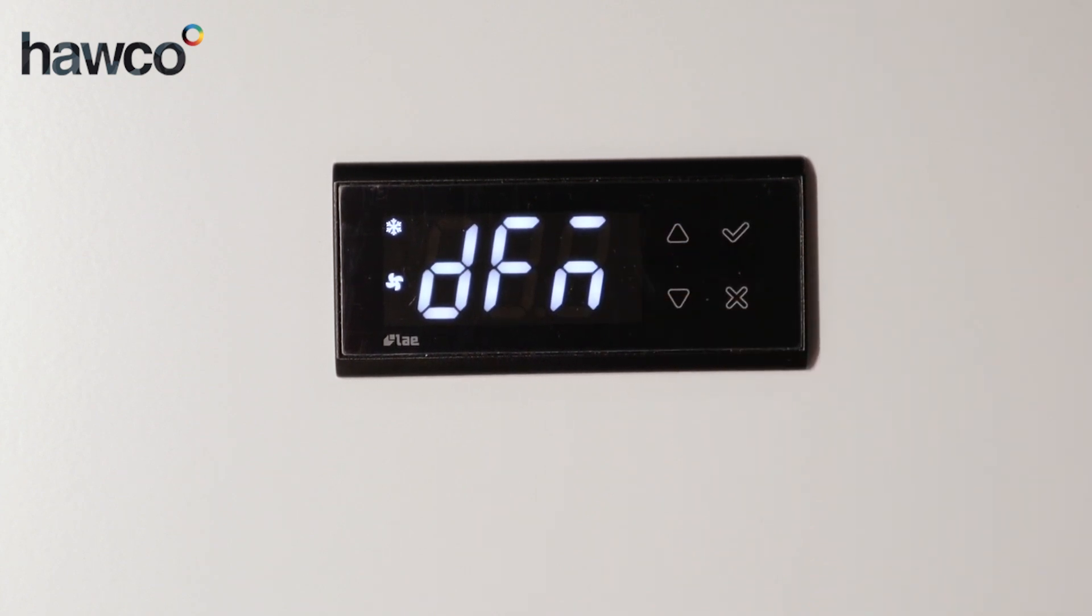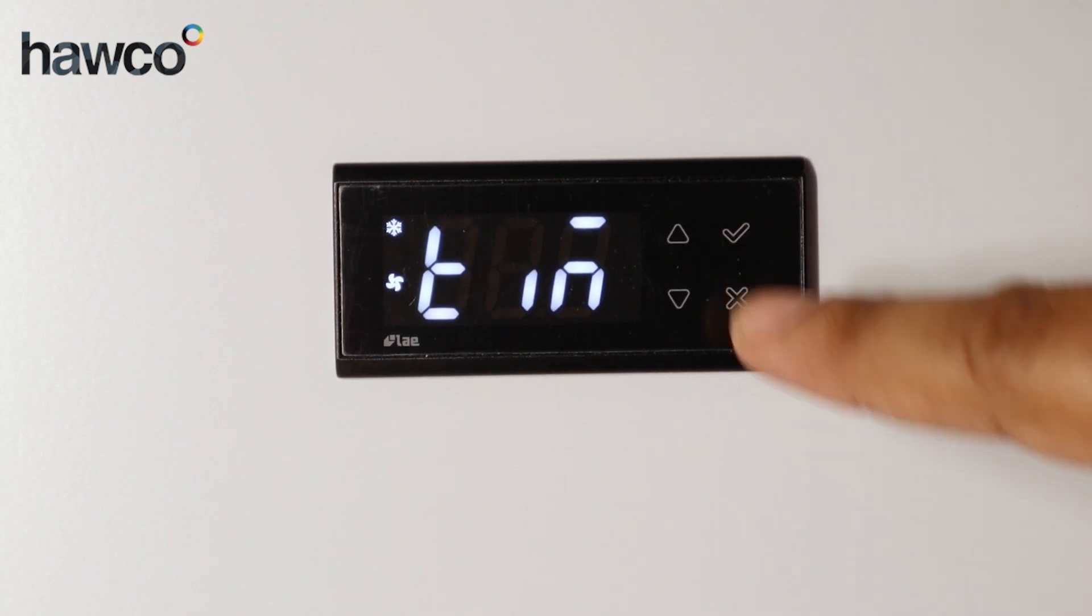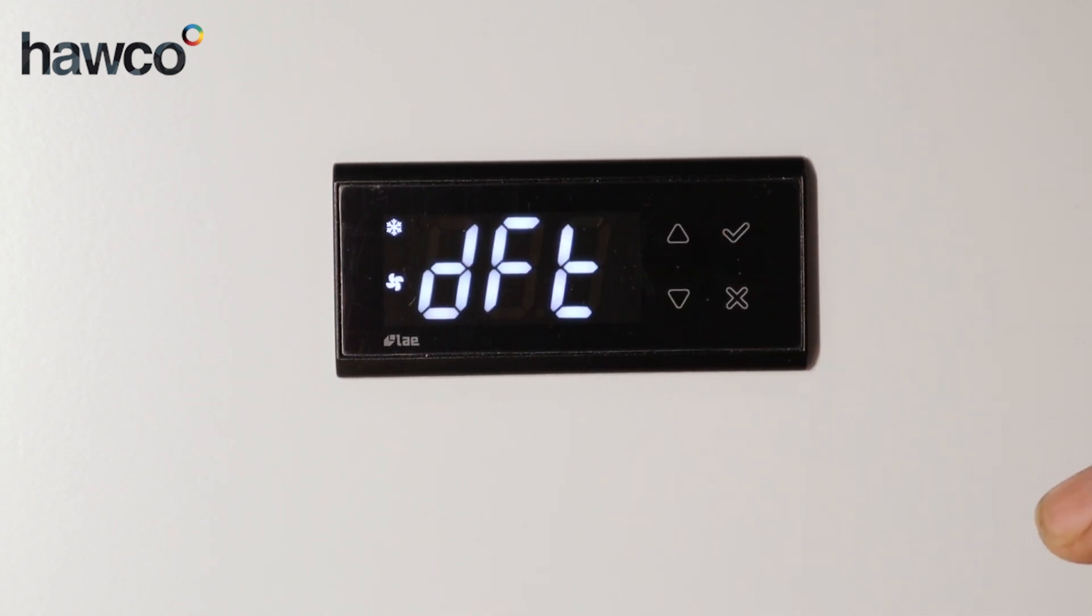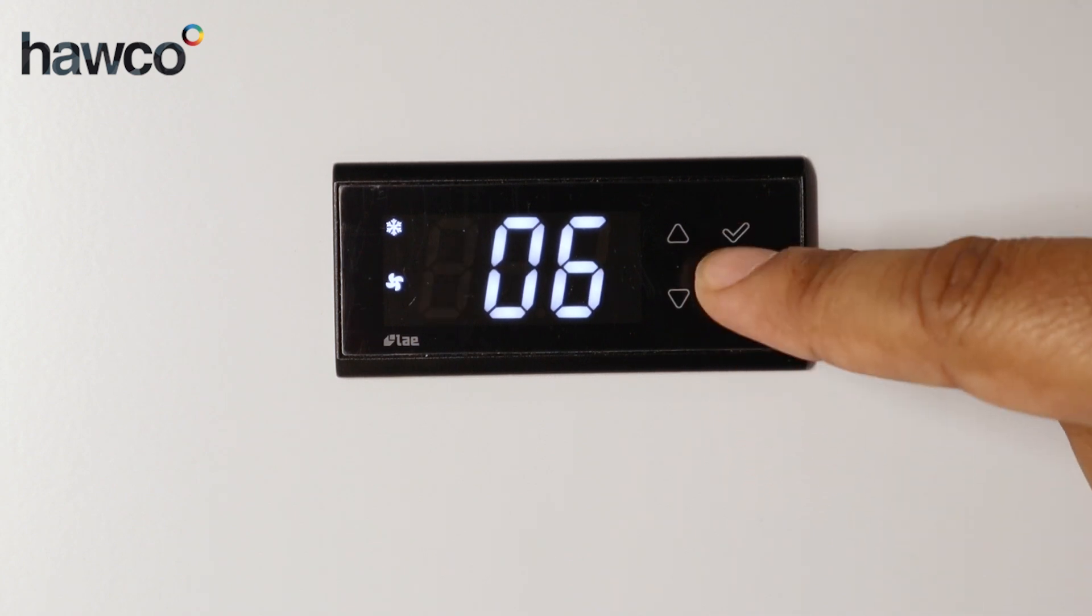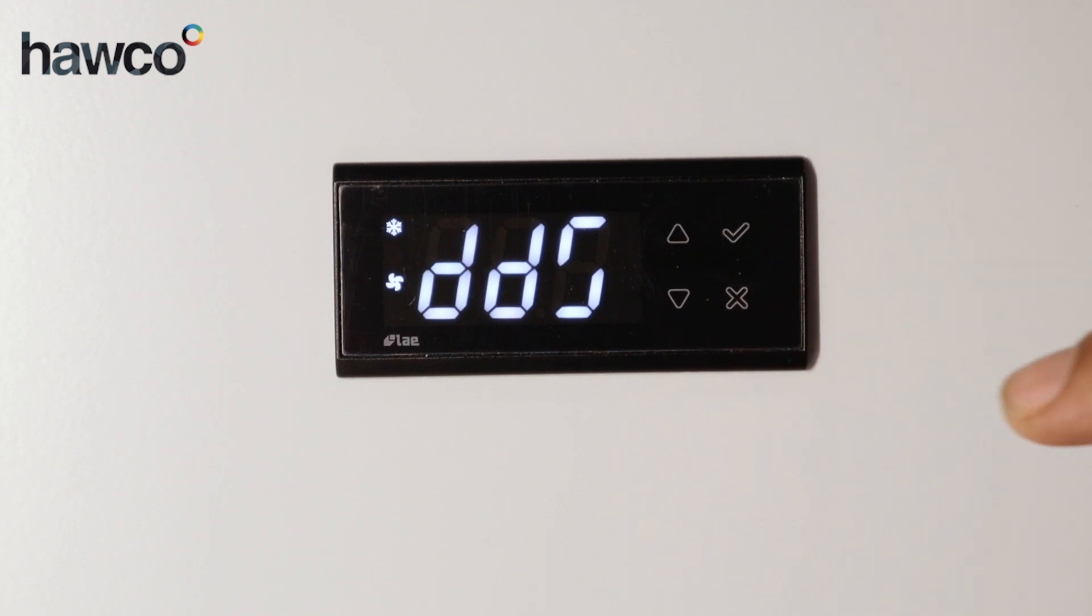The first one is DFM, this is defrost mode. In this one we've got it set to time. DFT, this is interval among defrosts. This one is set to six hours. DDS is the interval time between the defrosts and this one is set to four hours.